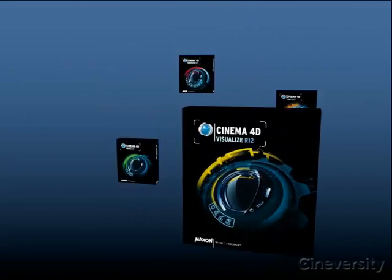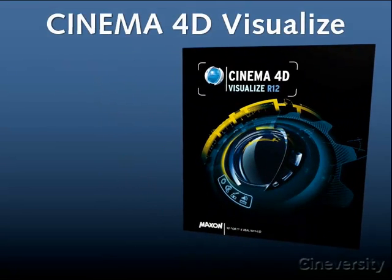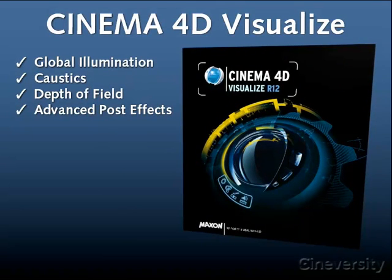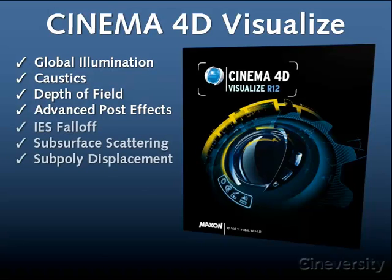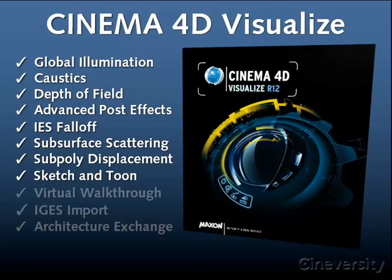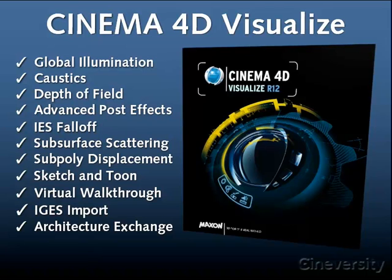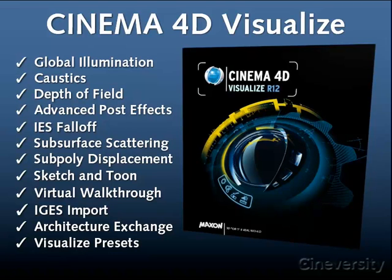Cinema 4D Visualize includes all of Cinema 4D's advanced rendering capabilities — global illumination, caustics, depth of field, and more. It also includes IES-based falloff, subsurface scattering, and subpolygon displacement effects, as well as Cinema 4D's Sketch & Toon system for non-photorealistic rendering. There's a virtual walkthrough tool to navigate your scenes using game-like controls, and powerful geometry import options including IGES import and connections to ARCHICAD and Vectorworks. There's also a preset library of objects, scenes, and materials designed for visualization.